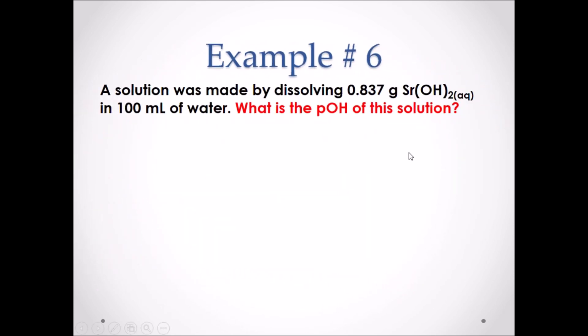Example number 6: a solution was made by dissolving 0.837 grams of strontium hydroxide in 100 milliliters of water. What is the pOH of this solution? Pause the video and attempt this example.